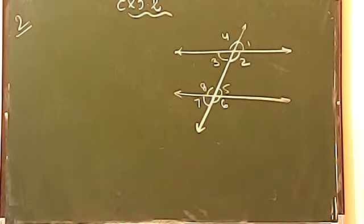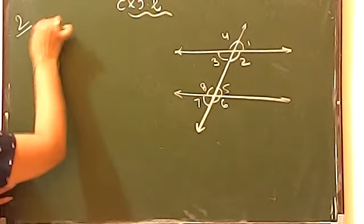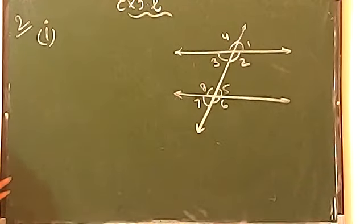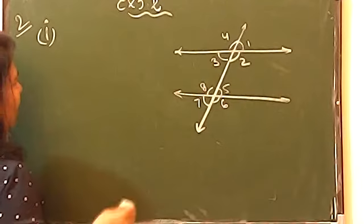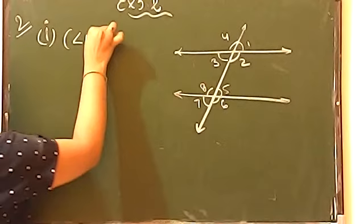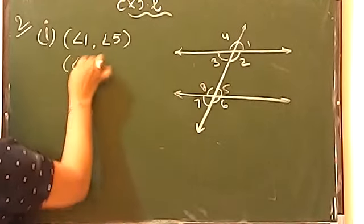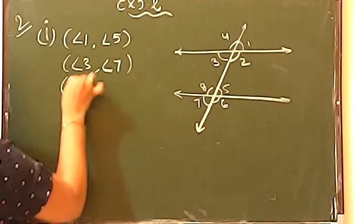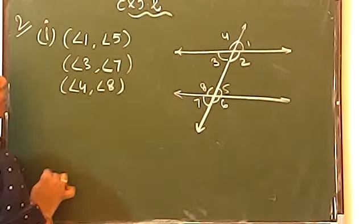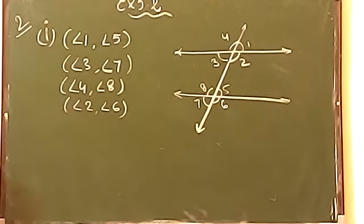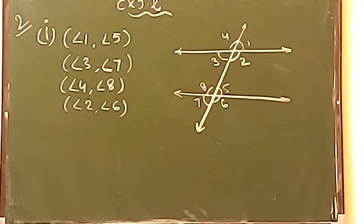Now it is asking: what are the pairs of corresponding angles? I have taught you how to identify corresponding angles. The pairs are: angle 4 and angle 8, angle 2 with angle 6, angle 1 with angle 5, and angle 3 with angle 7. These are all corresponding angles.